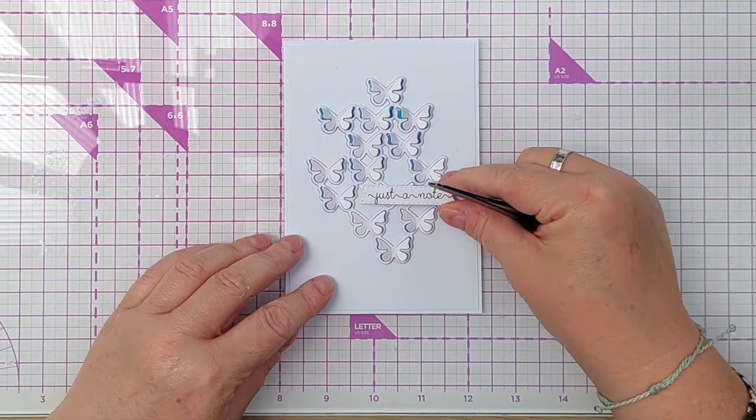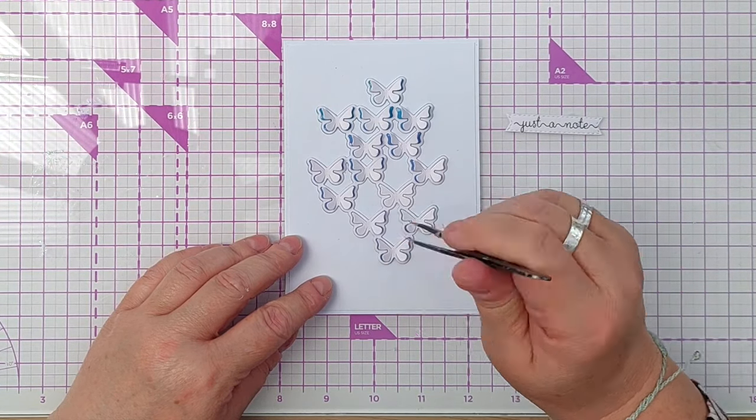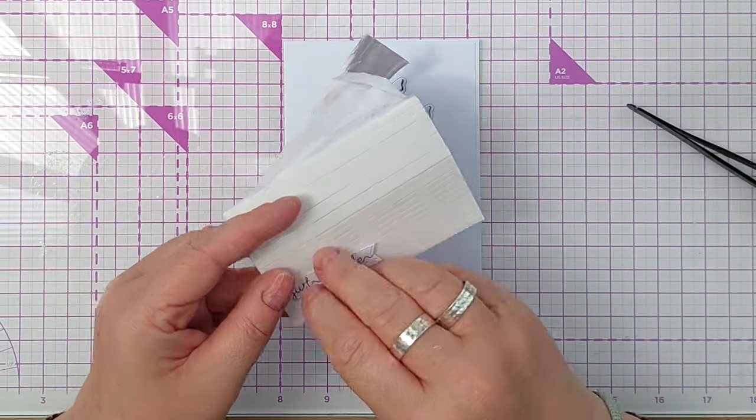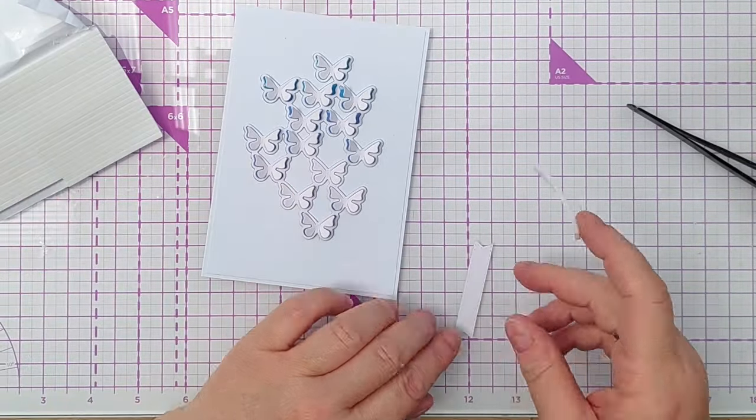So now I've got a little banner that can go right there and I'm going to pop it over this butterfly because it will nestle nicely here. And I'm going to cut some foam tape or foam strips and add a couple to the back to give it a bit of dimension.